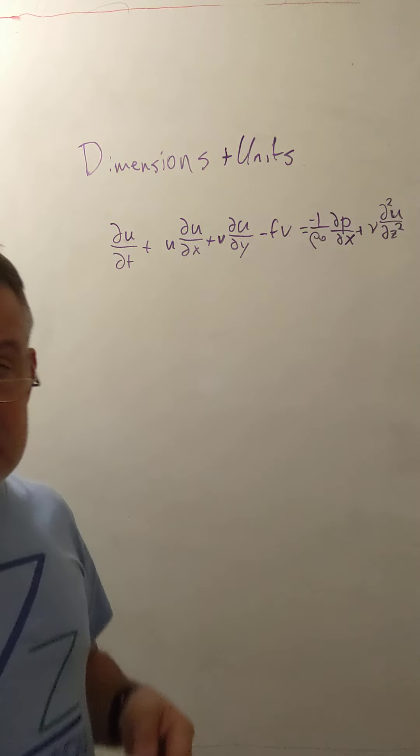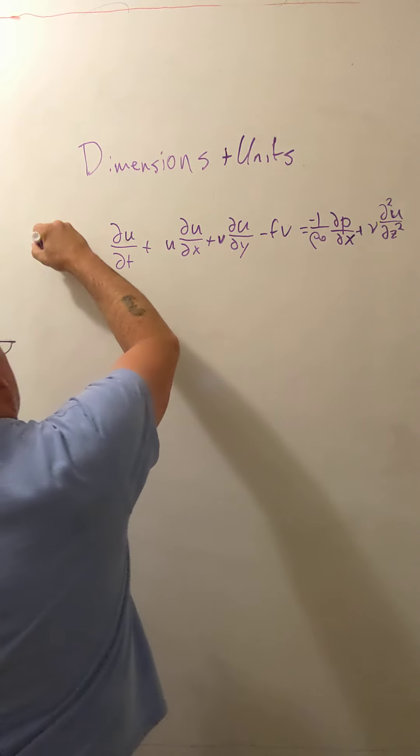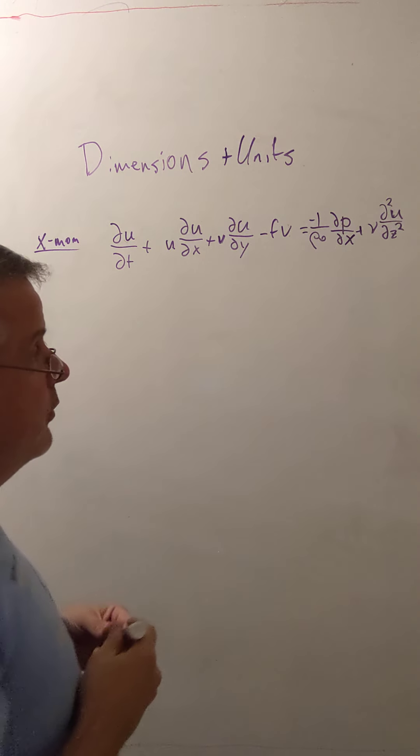Okay, but how do we get these dimensionless ratios out of an equation? This is a nice example equation. This is the x-momentum equation of a rotating fluid.